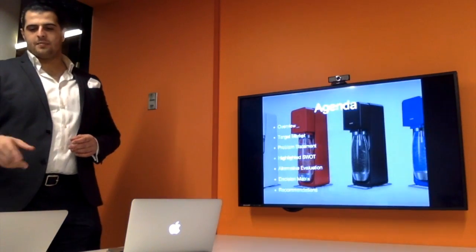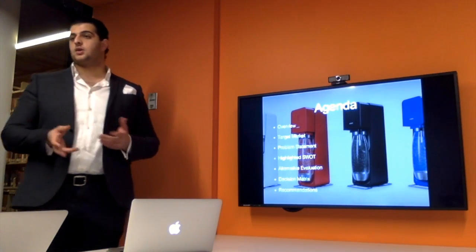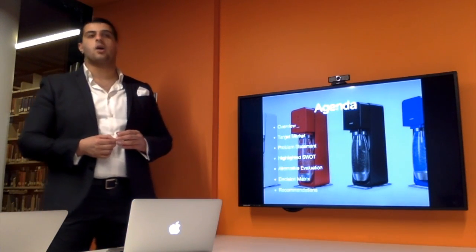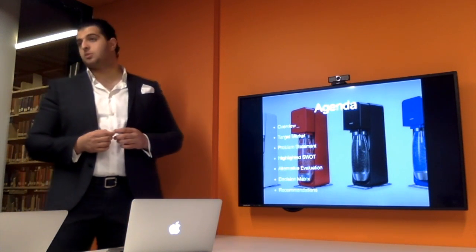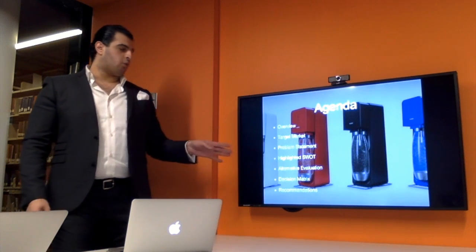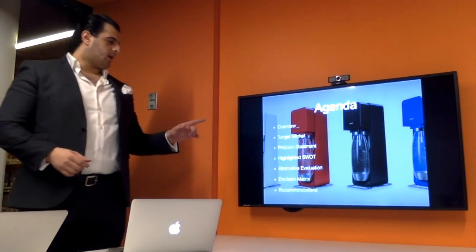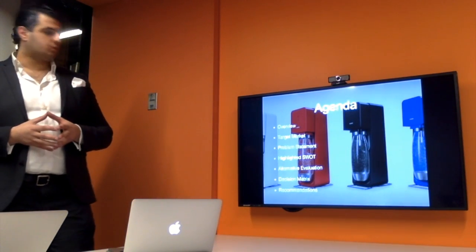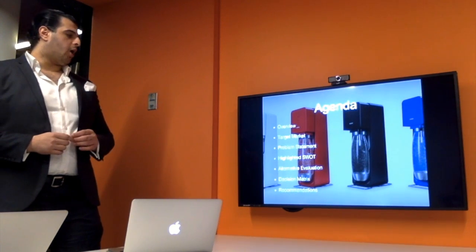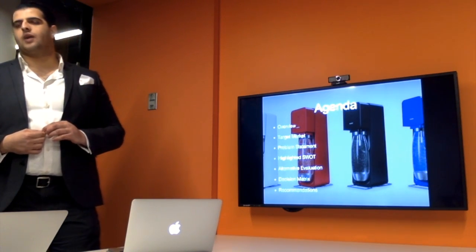So let's look at today's agenda. First, we're going to start with an overview of the company itself, what it has done, what it is, and what it represents. Second, we'll talk about the target market the product is aimed at. Third, we're going to look at the problem statement of the company and what they're trying to achieve with their new strategy. Fourth, we'll look at a highlighted SWOT: the strengths, weaknesses, opportunities, and threats. Then we're going to look at an alternative evaluation, a solution to the strategy they're trying to come up with and what they should do. Also, a decision matrix, and finally we're going to end with a recommendation.